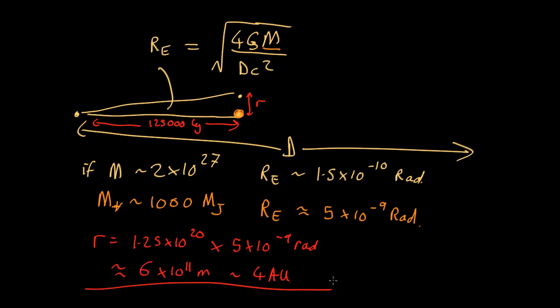That's 4 astronomical units. So to be an effective lens, you need to be a few astronomical units out — you don't want to be hundreds out, and you don't want to be 0.1 out.